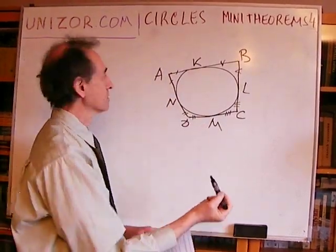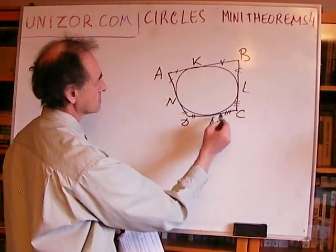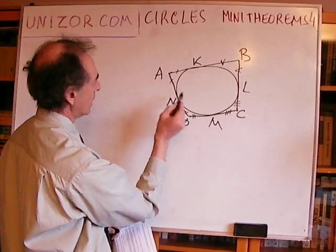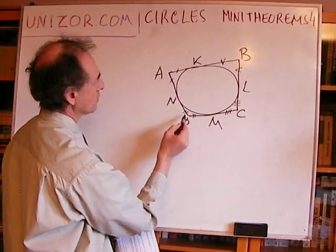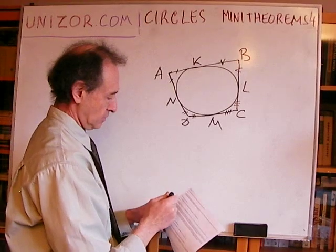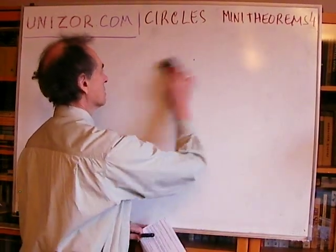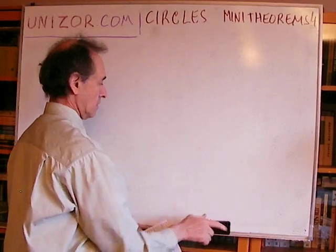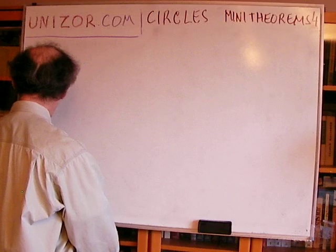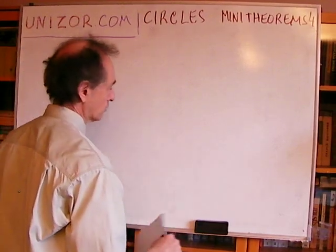If you add these matching segments — one, two, three, and four — you get exactly the same components as the other pair of opposite sides. One strike, two strikes, three strikes, and a fourth. Same here. That's why the sum of opposite sides of the circumscribing quadrangle is equal to each other.